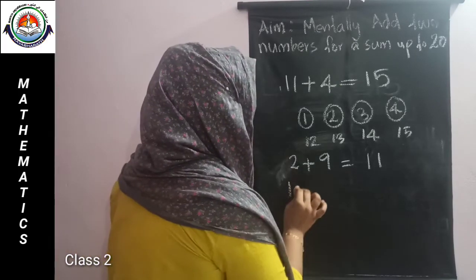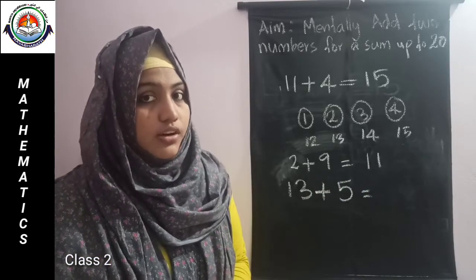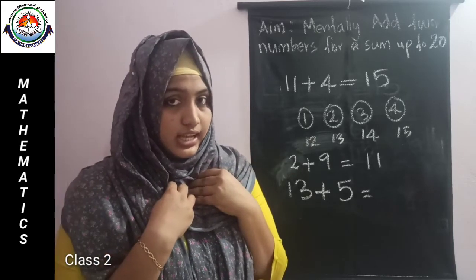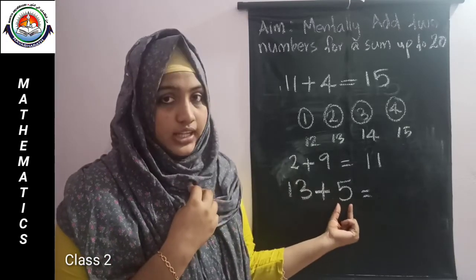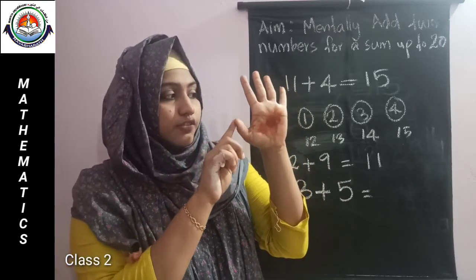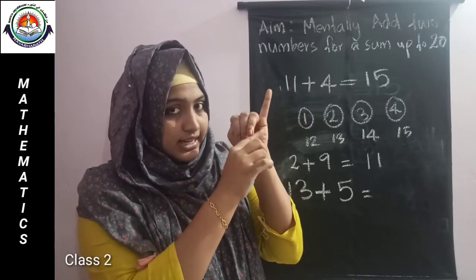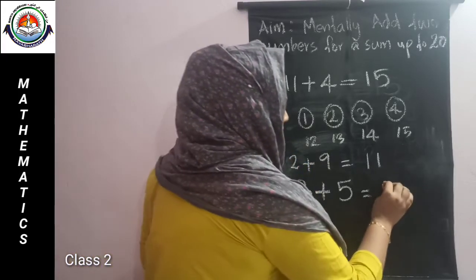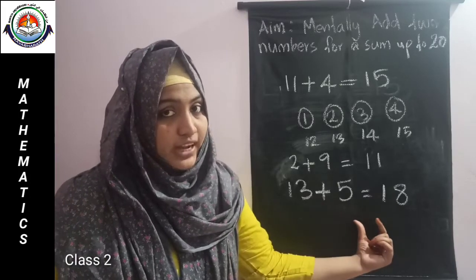13 plus 5. Which is the bigger number? 13. Think about the number 13. The smaller number is 5, so take 5 in our hand. Count after 13: 14, 15, 16, 17, 18. What we got? 18. So we can write 18 here. The sum of 13 plus 5 is 18.